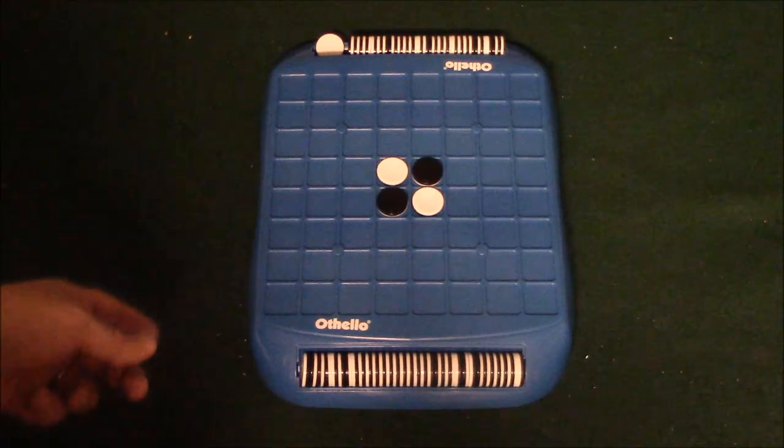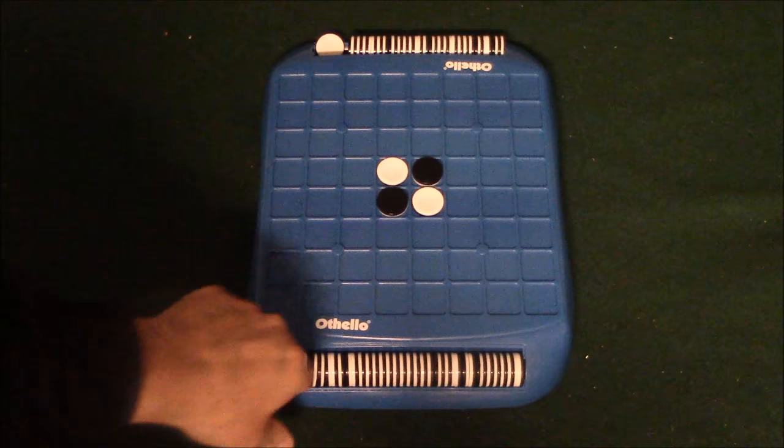So I'm going to go ahead and show you how this works. You're going to have one side that's white and one side that's black. Whichever color you are, you want to have the most color of your chips on this board by the time the game ends. You're going to be placing all these chips on the board.